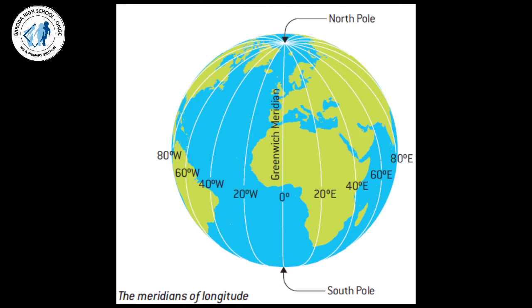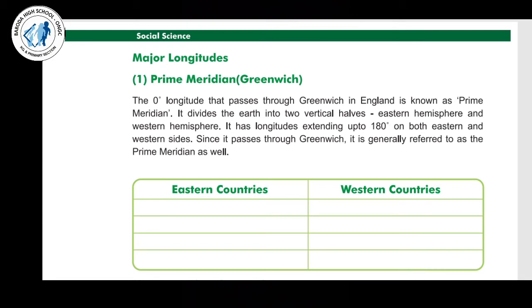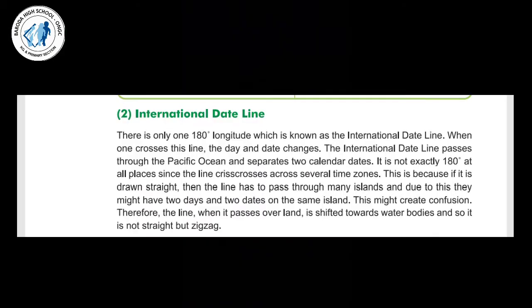Next is the international date line. So what is actually the international date line? The international date line is an imaginary line drawn on the surface of the earth, running from the north pole to the south pole.